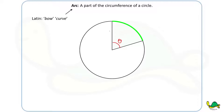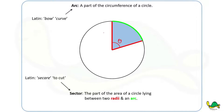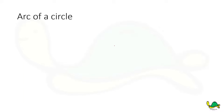Arc is the Latin word which means bow or curve. Sector came from a Latin word meaning to cut. The part of the area of a circle lying between two radii and an arc is known as a sector. You can also think of a sector as a slice of a pizza.